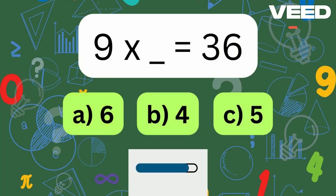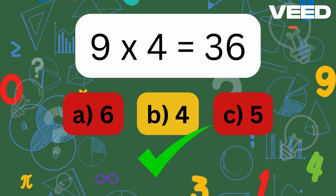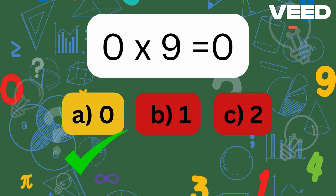9 times what equals 36? 9 times 4 is equal to 36. What times 9 is 0? 0 times 9 is equal to 0.